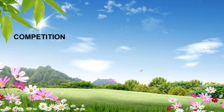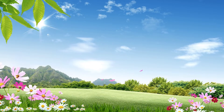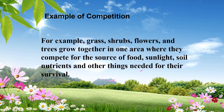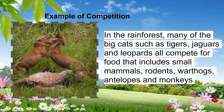Another interaction is called competition. It is an interaction wherein organisms compete for their survival. For example, grass, shrubs, flowers, and trees grow together in one area, where they compete for their source of food, sunlight, soil, nutrients, and other things needed for their survival. In the rainforest, many big cats — such as tigers, jaguars, and leopards — all compete for food that includes small mammals, rodents, warthogs, antelopes, and monkeys.